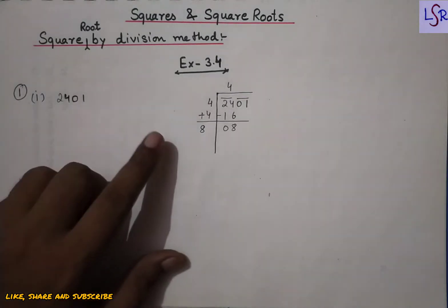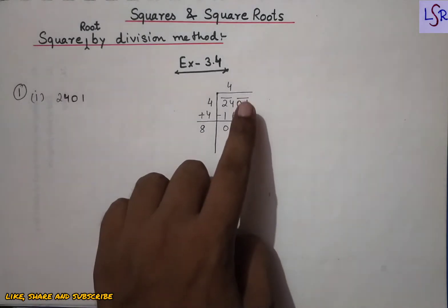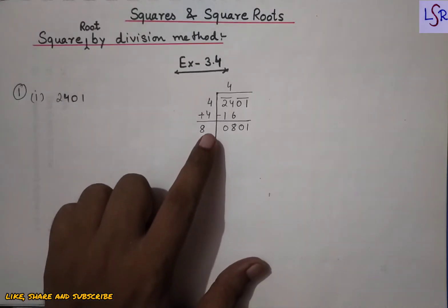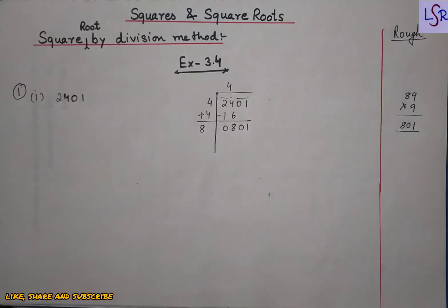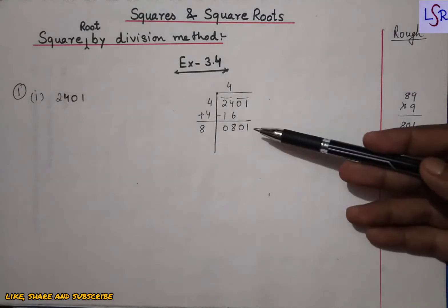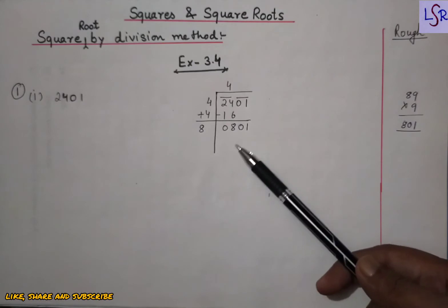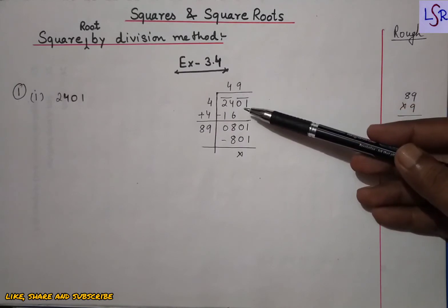On adding 4 to 4 we got 8, and subtracting 16 from 24 we got 8 again. Now we copy the two digits 0 and 1 down here. After copying, we write something after 8 — whatever number we write, we multiply by the same number. If we write 1, multiply by 1; if we write 2, multiply by 2. Here we multiply 89 by 9 and get 801, which matches. So we write 9, giving 801, subtract to get 0. This means 49 is the square root of 2401.